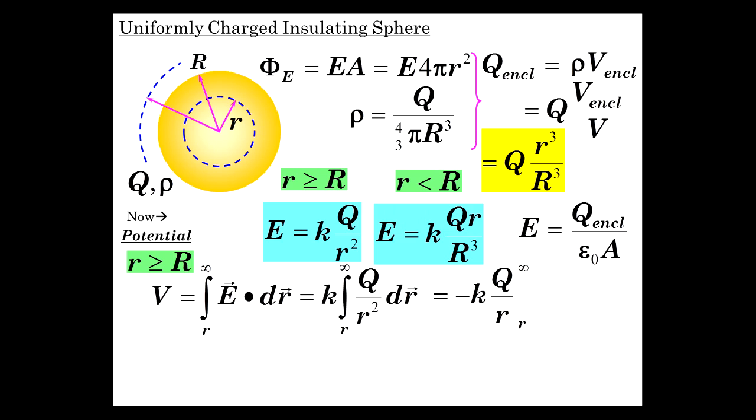And 1 over r squared minus 1 over r. So we have K times Q, R to infinity, which is 0, plug it in infinity, minus plug in r. And we have minus minus KQ over r, which is the familiar potential from a point source, which is KQ over r. That hasn't changed.